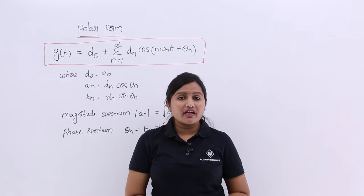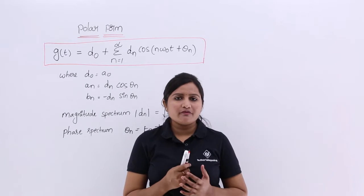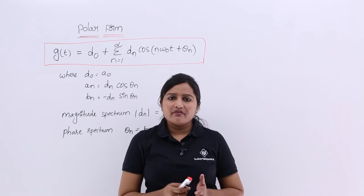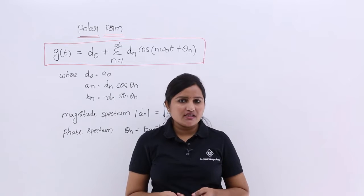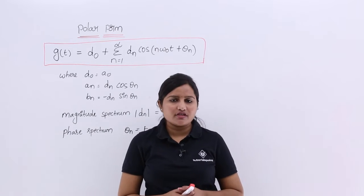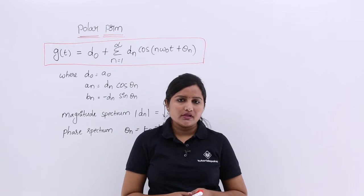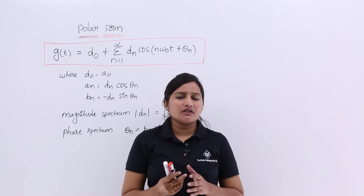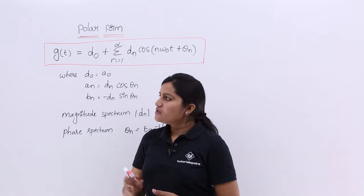In this video, we are going to discuss the polar form of a signal. Whenever a signal does not have any symmetry, we will transform the trigonometric Fourier series into polar form. So how we will transfer the trigonometric Fourier series into polar form —